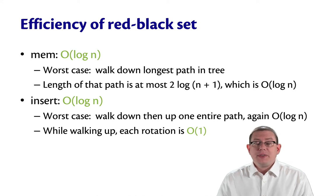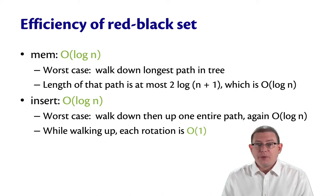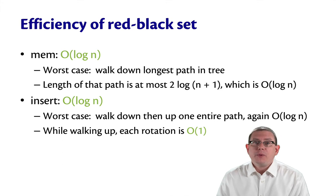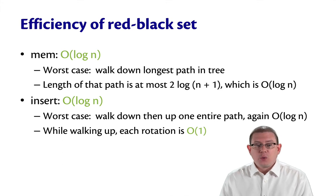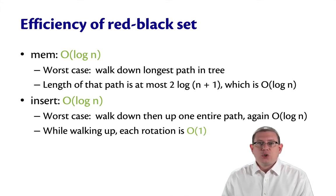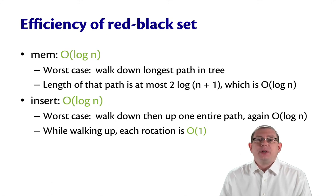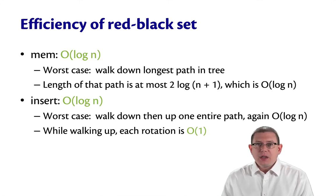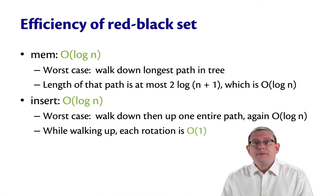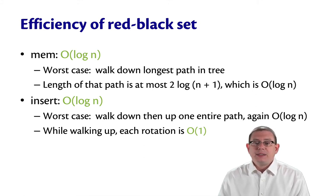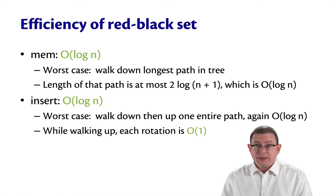Let's review what we've learned about the efficiency of the red-black operations. The mem operation runs in logarithmic time. The worst case is when it has to walk down the longest path in the tree, but because of the red-black invariants, we've ensured that the length of that path is at most O(log n).